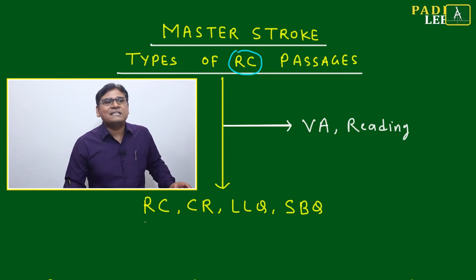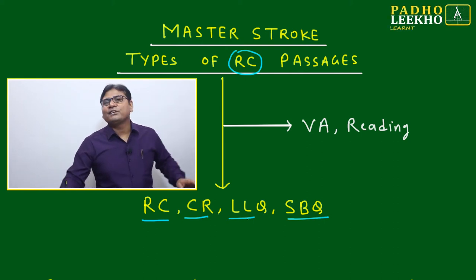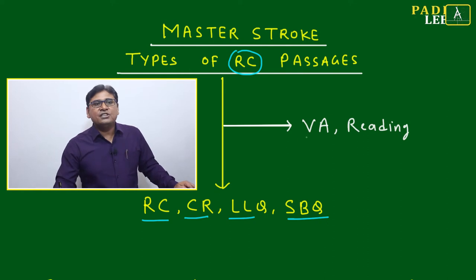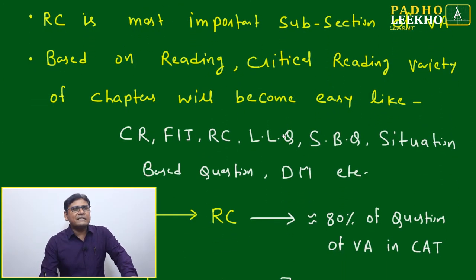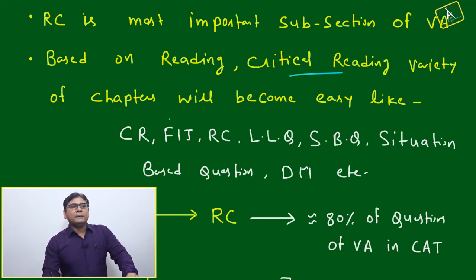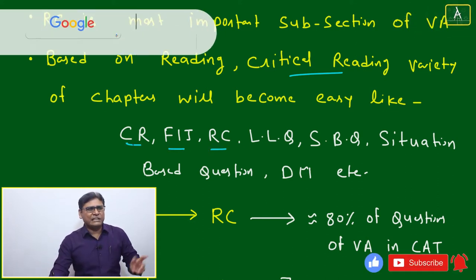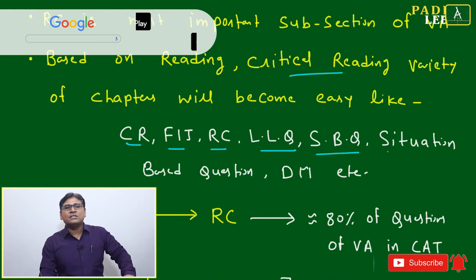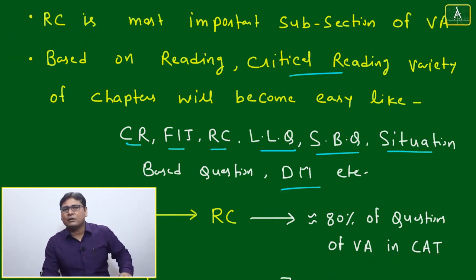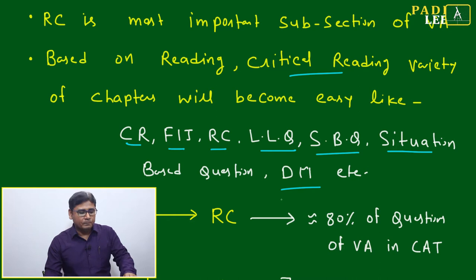Today's discussion will affect your RC, CR, LLQ, and SBQ. LLQ is Last Line Question and SBQ is Summary Based Question — both are part of Verbal Ability. RC is the most important subsection of VA. Being a good critical reader makes a variety of chapters easier, including Critical Reasoning, FIJ (Fact Inference and Judgment), RC, LLQ, SBQ, and Decision Making.